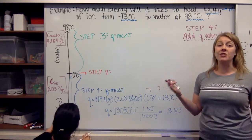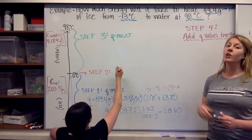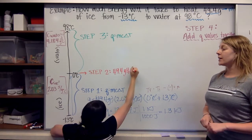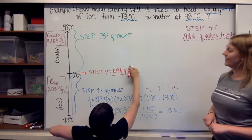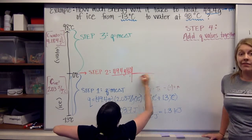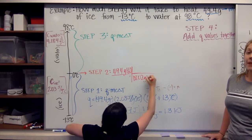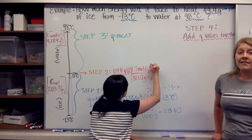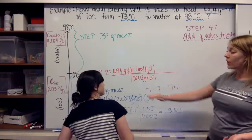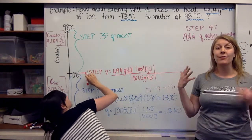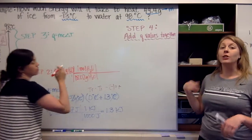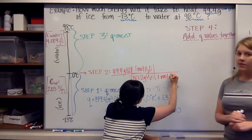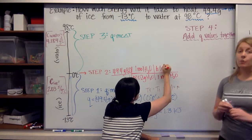Step two: remember the temperature is not changing at a phase change, so we can't use Q equals mcΔT. We're going to use dimensional analysis. We start with 49.4 grams of water, convert grams to moles using 18.02 grams per one mole of water. Then we need the delta H at this phase change — we're going from ice to water, which is melting, so the delta H of fusion is 6.01 kilojoules per one mole.